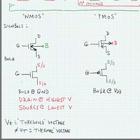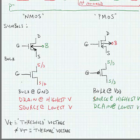In the PMOS, we have the opposite situation. The source is at the highest V. And the drain is at the lowest V.